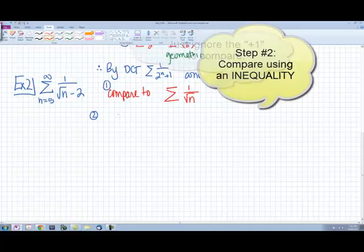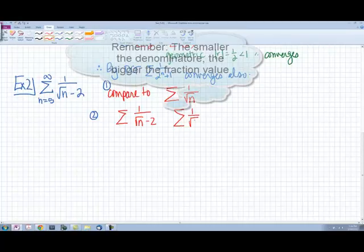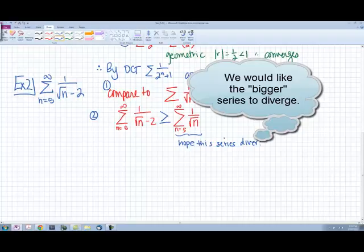Our second step is to write the inequality. I'm going to have 1 over square root of n minus 2 and 1 over square root of n. So this is now greater than or equal to. We are going to hope that this series diverges.